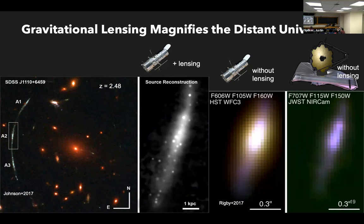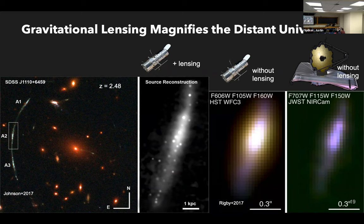Jim Rigby reminded me of one other galaxy that kind of looks like the Sparkler — also gravitationally lensed with these clumps. Here's the image of this galaxy and what the lens modeling gives you if you account for all the lensing. Without the lensing you just wouldn't see any of the little structures, any of these little star clusters. Even JWST alone, without the lensing boost, would just see this kind of featureless galaxy. JWST plus lensing is amazing.